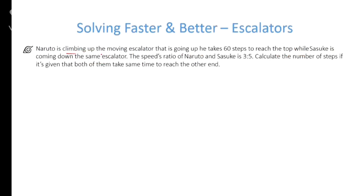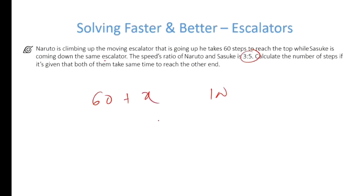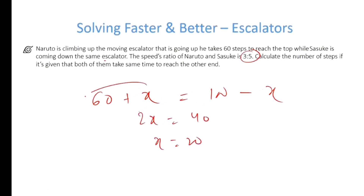Next one: Naruto is climbing up a moving escalator going up. Naruto takes 60 steps; in the same time Sasuke would take 100 steps since the speed ratio is 3:5. Let's say the escalator takes x steps in each case. Equating the total steps: 2x = 40, so x = 20, and the total number of steps is again 80.